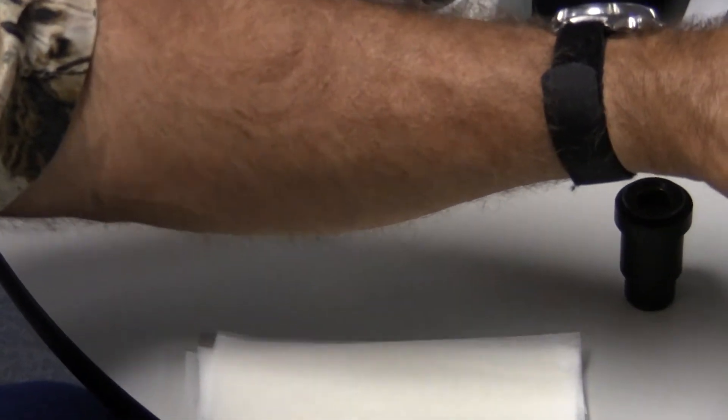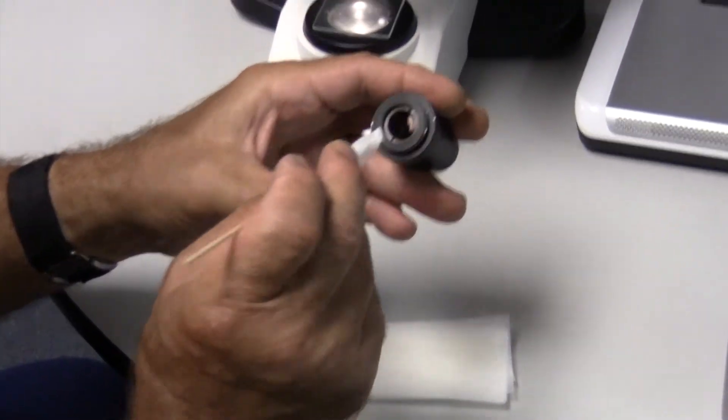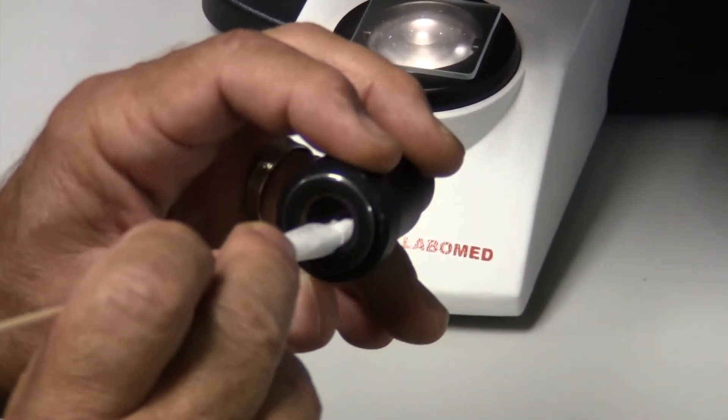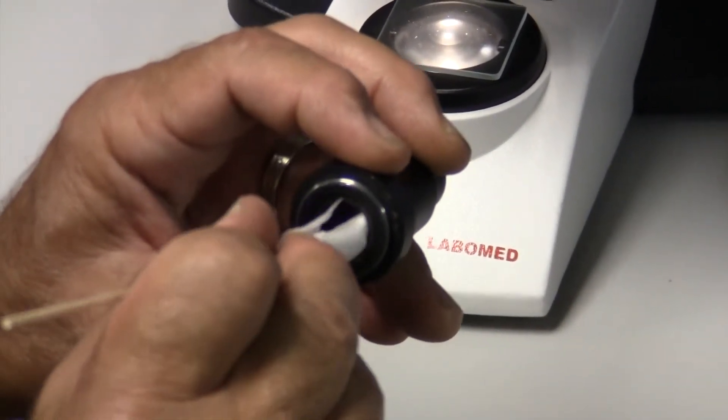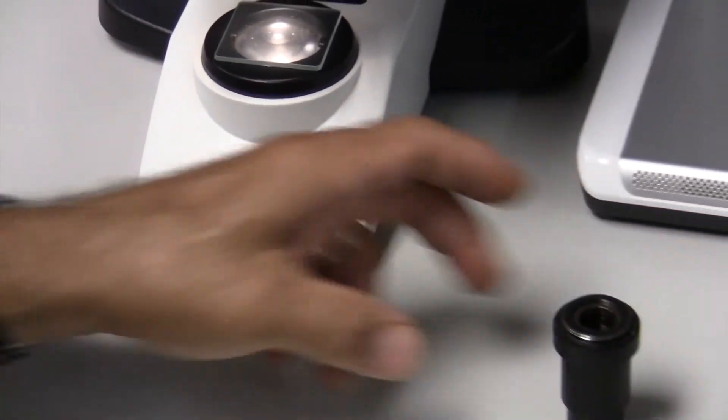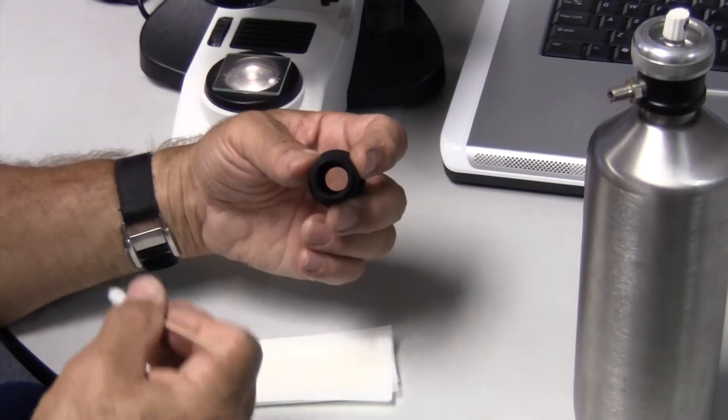Put a little glass cleaner on it, just to dampen it, you don't want it soaked. Lay it on the lens, and then carefully rotate the lens and the paper, working your way to the outside of the lens. And we're going to repeat the same thing on the inside of the lens.